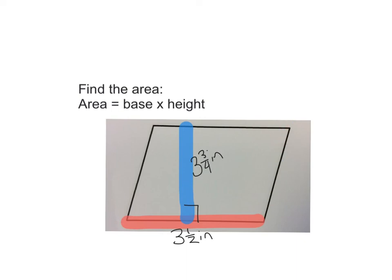I take my base, which is three and a half, times my height, which is three and three-quarter inches. And I'm going to multiply with my calculator to find an answer of thirteen and one-eighth inches squared.